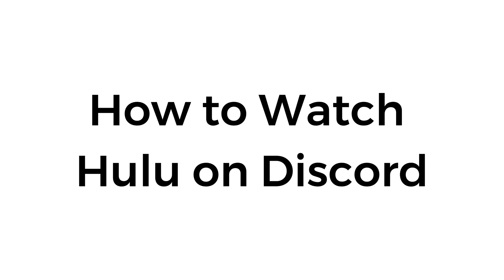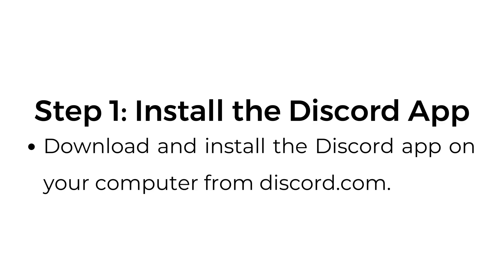How to watch Hulu on Discord. Step number one, install the Discord app. Download and install the Discord app on your computer from discord.com.